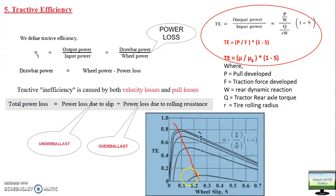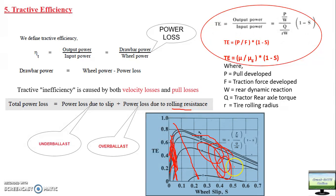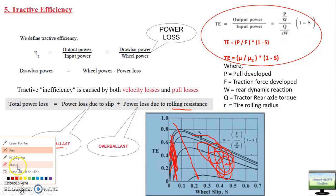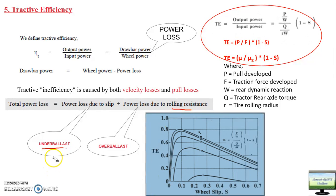The optimum performance line lies between 8–20% slip, with the optimum value around 15%. Operating below 8% slip means power is being lost due to high rolling resistance — the tractor is over-ballasted, and this region is controlled by load. If slip is very high, the region is controlled by slip and the tractor is under-ballasted — you should add more weight. The optimum operating zone is 8–15% slip. Higher mobility number means higher tractive efficiency — this is the significance of mobility number.